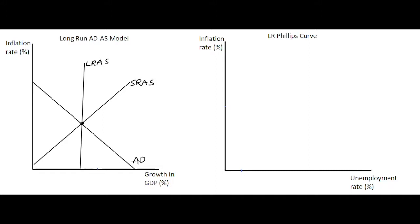The intersection between short and long-run aggregate supply and aggregate demand gives us the inflation rate in the economy and also the GDP growth rate. If we take the scenario of an expansion in the economy — maybe due to consumer optimism and consumption increasing — the aggregate demand curve will shift rightwards, resulting in a short-run equilibrium moving from point A to point B, where both the inflation rate and GDP level have increased.